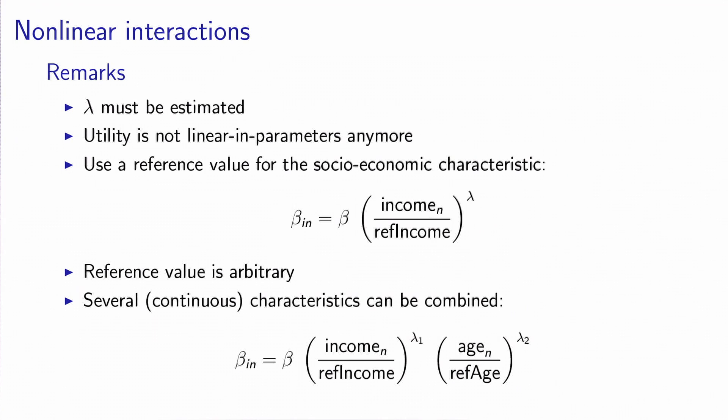Now you can be creative and combine various socio-economic characteristics into this specification, but they must be continuous. So typically the two classical continuous socio-economic characteristics are income and age. So you can define your individual specific coefficient to be the product of a parameter β, a term which is related to income, again divided by the reference income and raised to λ1, and the third term, which is the age, divided by the reference age and raised to a power λ2.